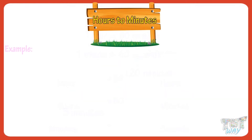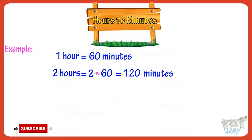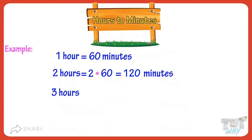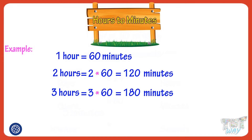Let's see some examples. One hour equals 60 minutes. So two hours equals 2 multiplied by 60, equals 120 minutes. Now let's convert three hours into minutes. One hour equals 60 minutes, so three hours equals 3 multiplied by 60, that is 180 minutes.